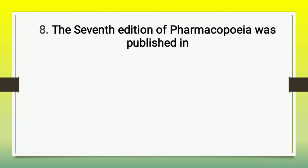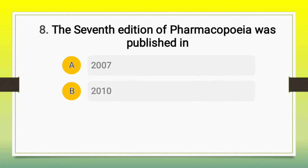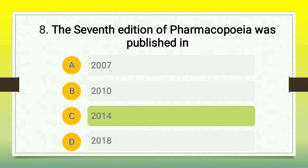The next question is about the Indian Pharmacopoeia: the seventh edition of the Indian Pharmacopoeia was published in — A) 2007, B) 2010, C) 2014, D) 2018. The right answer is option C, 2014.